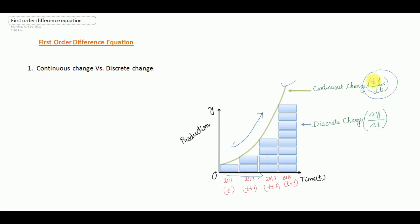On the other hand, discrete change is the change of the dependent variable in two different periods. For example, we are going to find out how much production is changing in 2012 over 2011 — then we are dealing with discrete change.